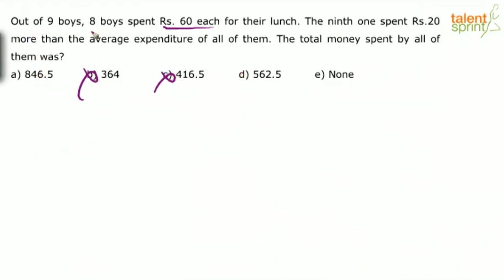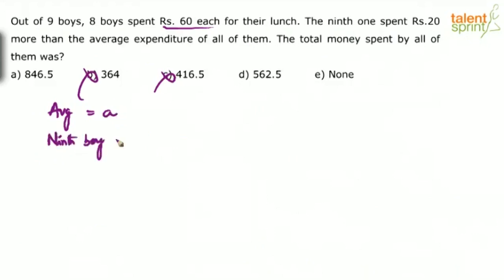Nine boys are there, out of which eight boys spent rupees 60 each for lunch. The ninth one has spent rupees 20 more than the average expenditure for all of them. Let us assume that average expenditure is equal to A. So the ninth boy has spent A plus 20 rupees.